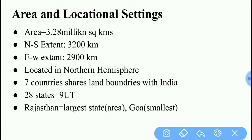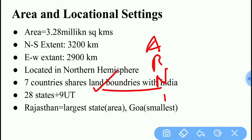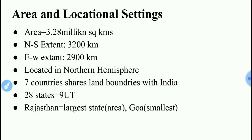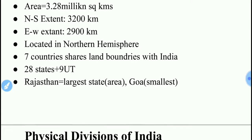7 countries share land boundaries with India. Take your atlas and try to mark them. These are Afghanistan — which touches India into POK, and India considers POK as its internal part — Pakistan, Nepal, Bhutan, Myanmar, and China. Name the other two countries which also touch India's boundary.